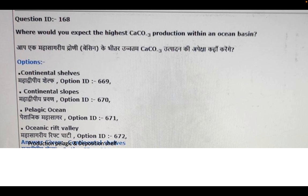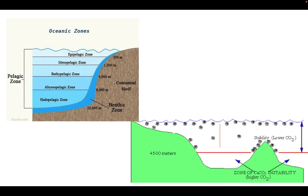But when we're talking about calcium carbonate production, it is always the pelagic ocean. How do we know calcium carbonate forms in the pelagic ocean only? See this photo. This is the pelagic zone - it can be epipelagic, mesopelagic, bathypelagic, abyssopelagic. These all are pelagic zones, so it is from the continental shelves to the open oceans.